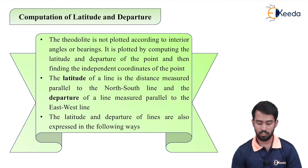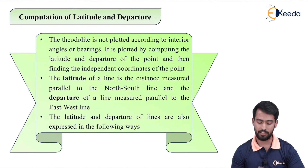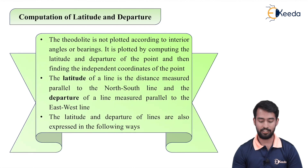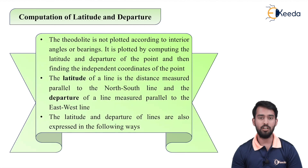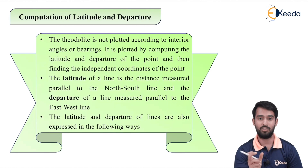Theodolite traverse is not plotted according to interior angles or bearings like in a compass. In theodolite, it is plotted by computing the latitude and departure of a point and then finding the independent coordinates of the point. So we find out the coordinates x and y — likewise we find out latitude and departure. These are known as coordinates.